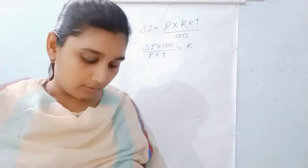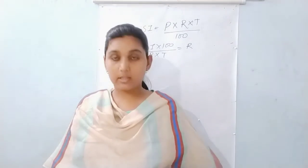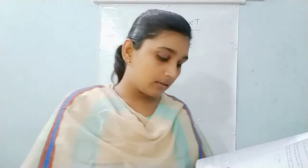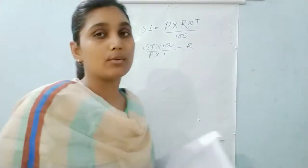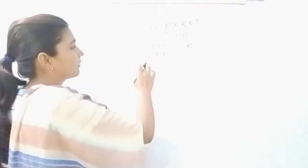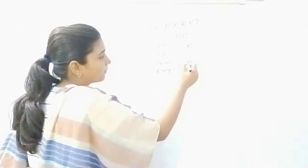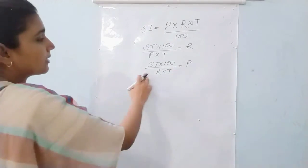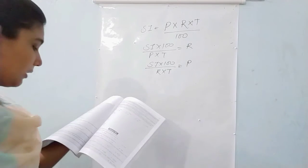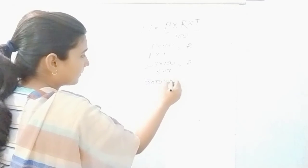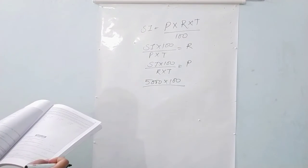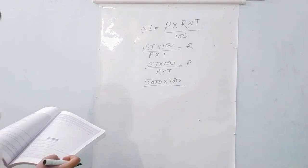Now we will move to question number 4: the simple interest becomes Rs.5000 for 5 years at the rate of 8% per annum — find the principal amount. SI is given, rate is given, and time is also given. Just manipulate the formula. If you have to find the principal, then P equals SI multiplied by 100 upon R into T. SI diya gaya hai 5000, multiply 100, rate is given 8%, and time is 5.